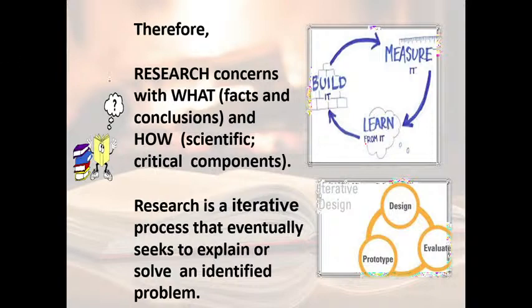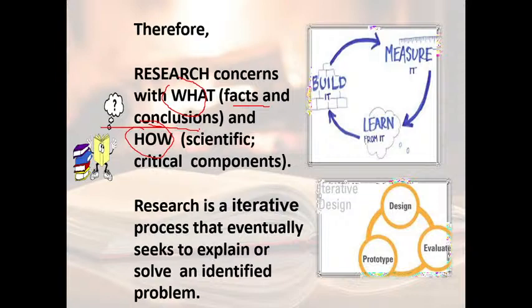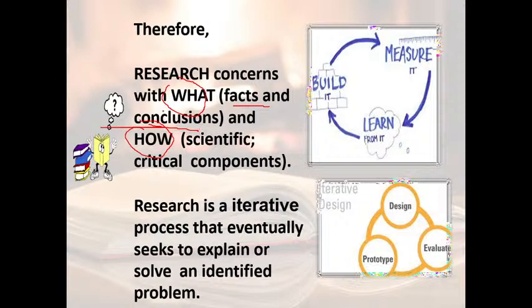In research, two main things come: what and how. 'What' refers to what the facts are and what the conclusions are — what is the reality of the problem and what are our results. 'How' refers to the scientific critical components — how this problem exists and how we can address it. In a proper way we can discuss both what and how. We identify any problem, work to solve it, and provide an explanation — learning from something, building on it, and measuring it.